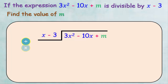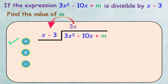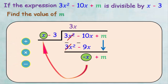We start by dividing 3x squared by x to get 3x, and write it in the quotient. Then we multiply 3x by x minus 3: 3x times x equals 3x squared, and 3x times negative 3 equals negative 9x. After subtracting, we get negative x plus m. We repeat the division steps by dividing negative x by x, giving negative 1.